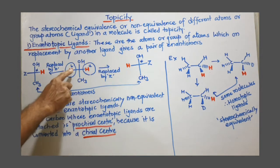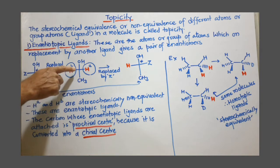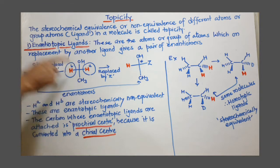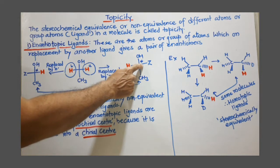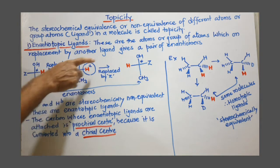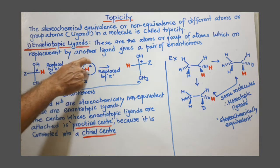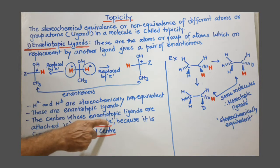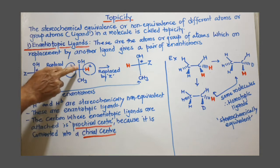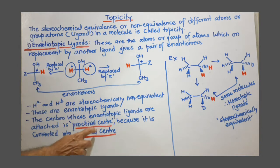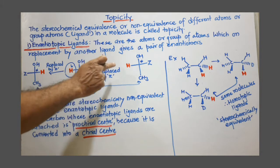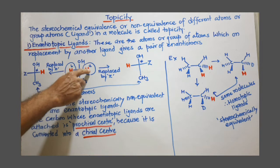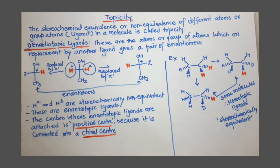Before we replace H-A and H-B, this carbon where these two protons are attached is not a chiral carbon. But when we replace either H-A or H-B, this carbon is converted to a chiral carbon. So the carbon which is converted to a chiral carbon by replacing just one atom is called prochiral carbon or prochiral center. When we replace one hydrogen or any atom or group of atoms with another atom or group, and that carbon is converted to a chiral carbon, it is called a prochiral carbon or prochiral center.